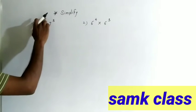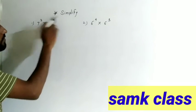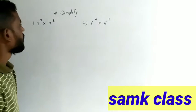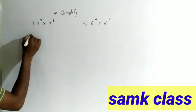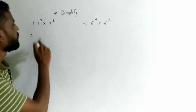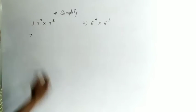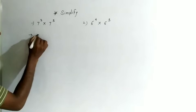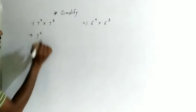Here, 7 raised to the power 2 into 7 raised to the power 3. Whenever the base is the same, you will add the powers. For example, 7 raised to the power 2.